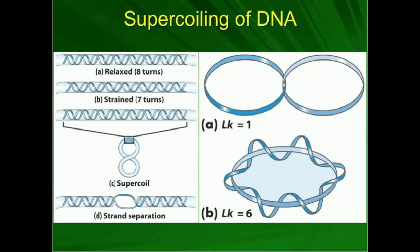Positive supercoiling is induced mainly by strand separation — usually when we're doing things like transcription or DNA replication. We have enzymes that deal with that positive supercoiling and relax it back down into a more negatively supercoiled state.